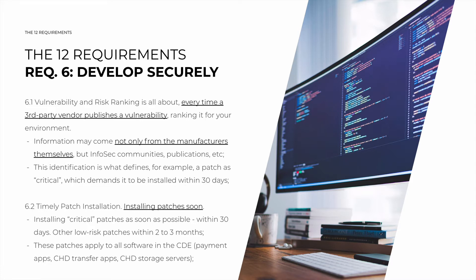That's a good segue to 6.2, which is about timely patch installation — the follow-up to the previous sub-requirement. There's a specific timeline for patches: critical patches must be installed as soon as possible, so within 30 days. Other lower-risk patches must be within 2 to 3 months. You need to assume that after this time period, when a vulnerability is published, the whole world knows about it, and attackers are actively scanning for applications and systems they can exploit. If you fail to install even one critical patch within 30 days, you will fail PCI DSS compliance.